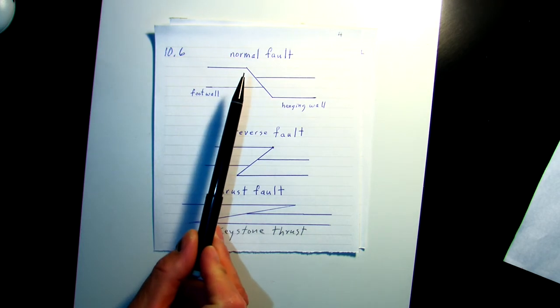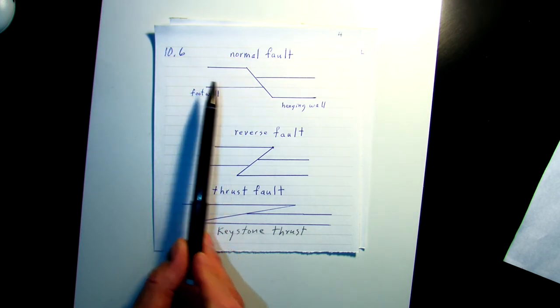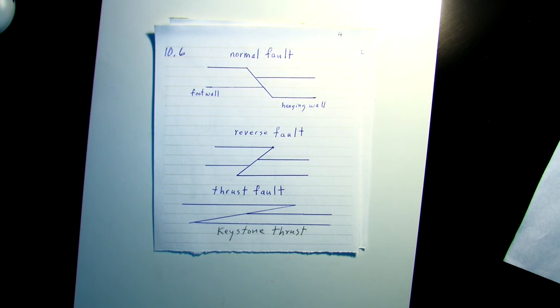Normal faults, as we see here, with a foot wall and a hanging wall, occur when rock strata is placed under tension. It's stretched, elongated, until it breaks.